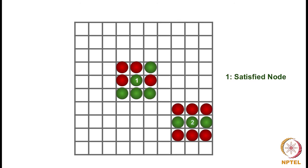Taking another example — node 2 has 8 neighbors, out of which 6 neighbors are of different types and only 2 neighbors are of the same type as node 2. With the threshold t equal to 3, since node 2 has fewer than t neighbors of its own type, this node 2 will be called an unsatisfied node.